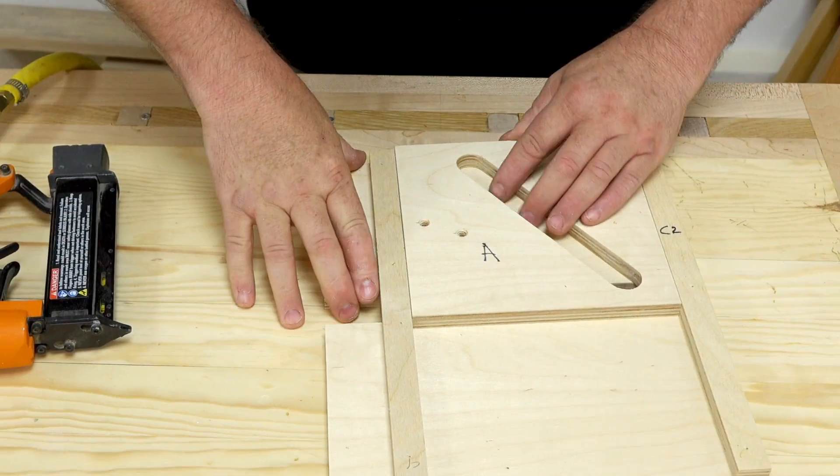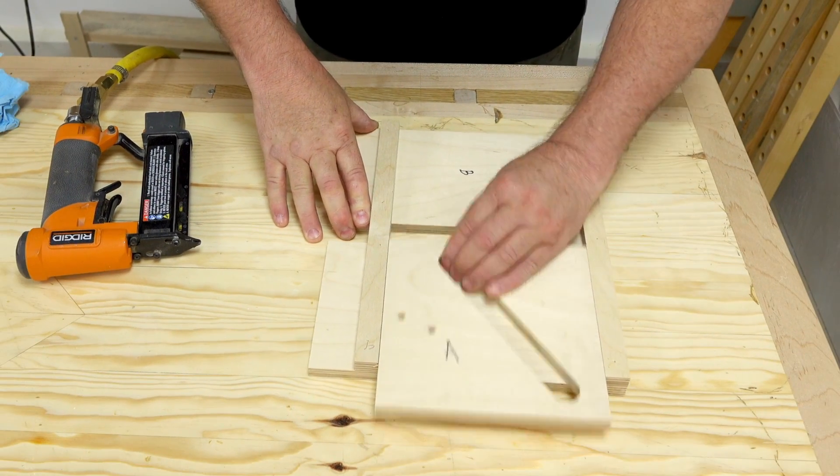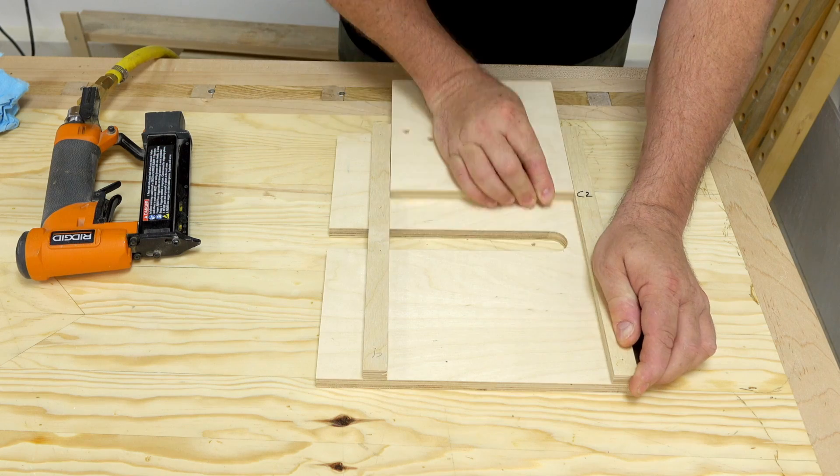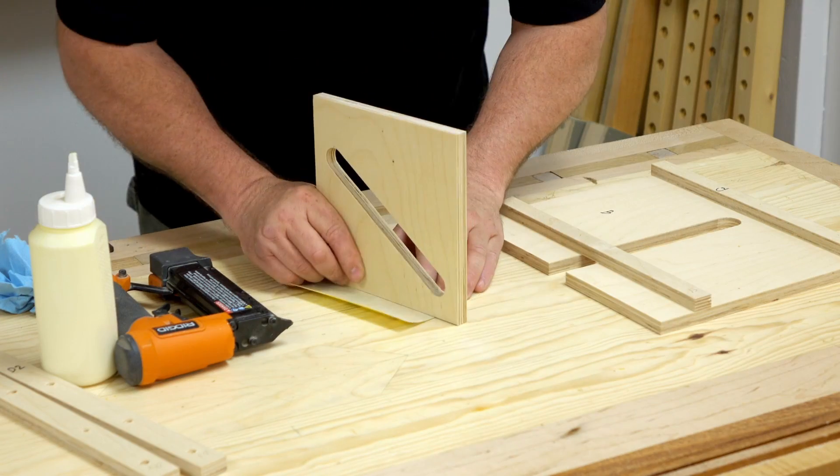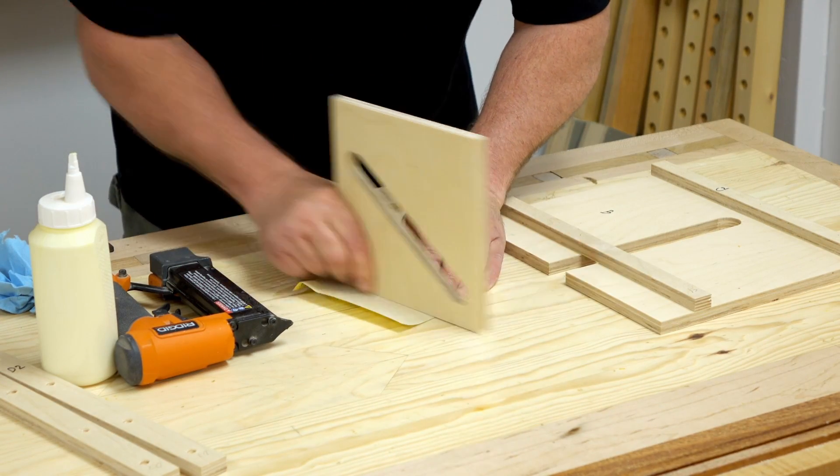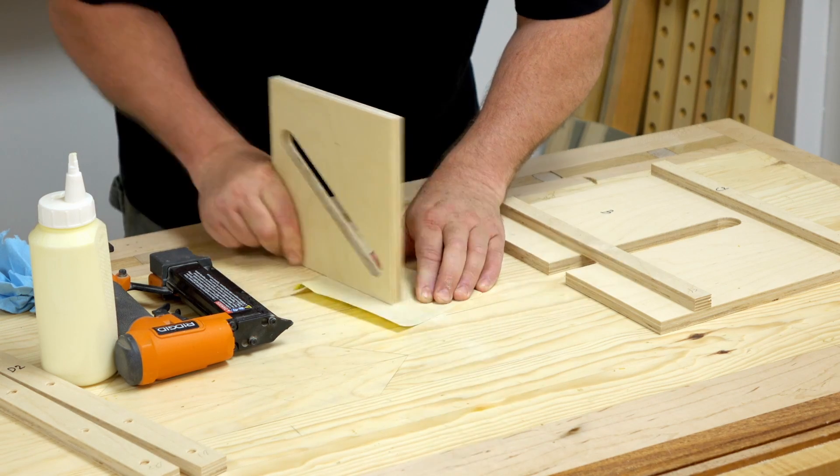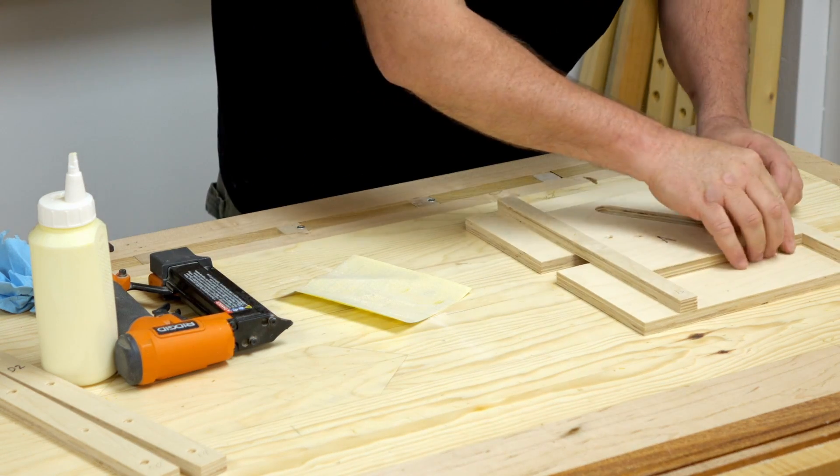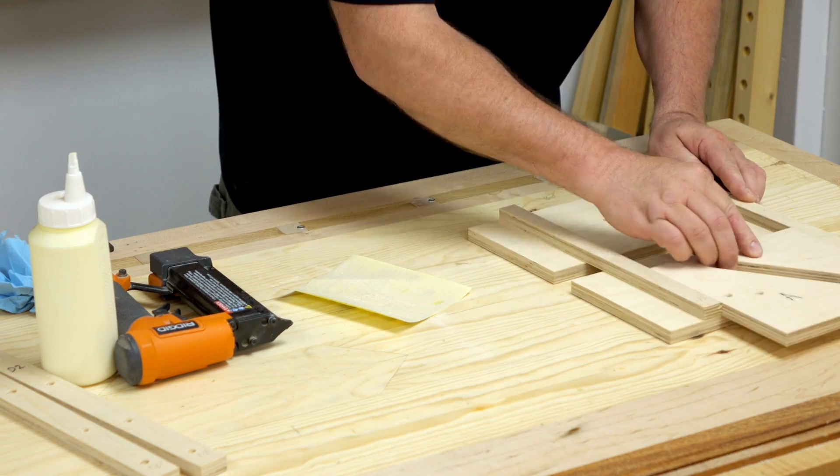It's very important to check now to make sure that part A slides back and forth properly. Adjusting the fit is very easy at this point. All you need to do is sand a little bit off either the top or bottom of part A. Now I need to let the glue set on these parts for at least 30 minutes before moving on to the next step.